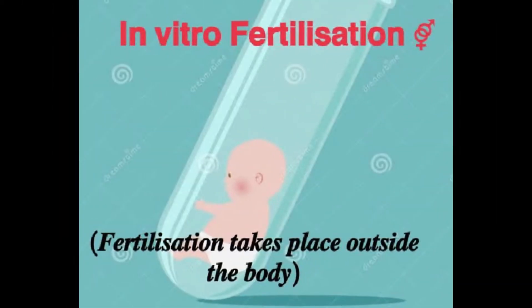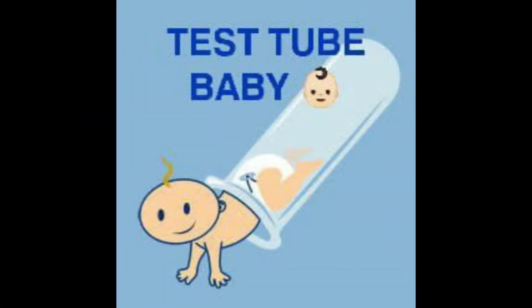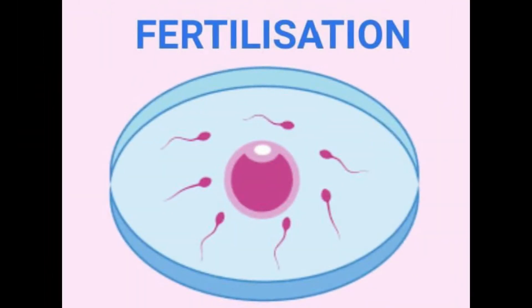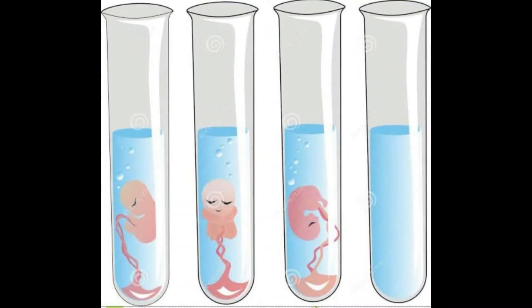Now coming to the second method of Assisted Reproductive Technology: in vitro. In vitro is generally IVF or the test tube baby program. In in vitro fertilization, fertilization takes place outside the body or in a laboratory — in a test tube in the laboratory.